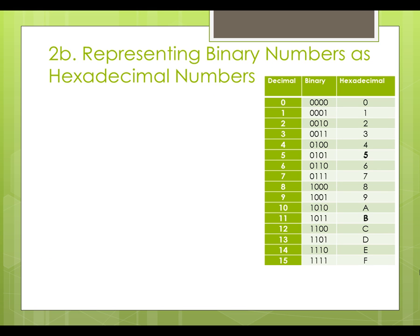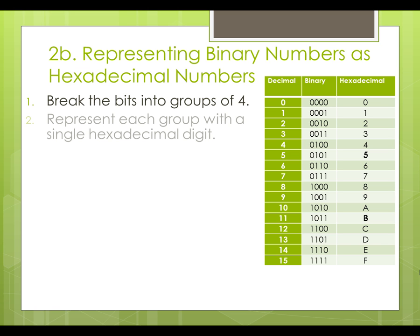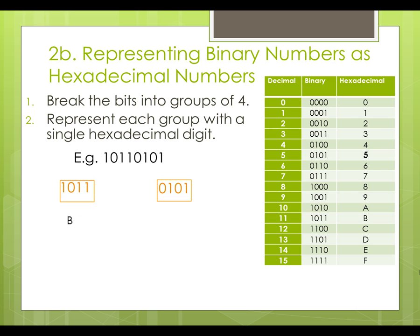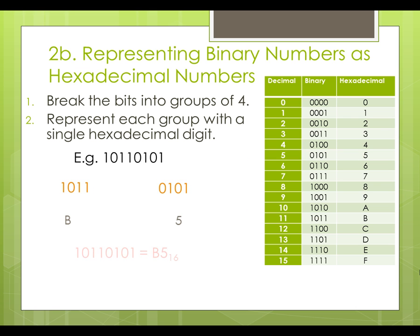To represent binary numbers as hexadecimal numbers, we will firstly break the bits into groups of 4. Each group can be represented by a single hexadecimal digit. For example, we have a binary number 10110101. We will break the 8 bits into two groups. Referring to the table, 1011 can be represented by hexadecimal b, and 0101 can be represented by hexadecimal 5. So binary number 10110101 can be represented by hexadecimal b5.